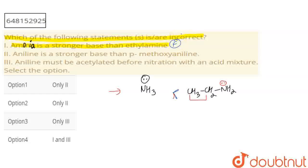The next statement is: aniline is a stronger base than para-methoxy aniline. This is aniline. And para-methoxy aniline is this structure. The methoxy group is an electron donating group, which will increase the electron density.